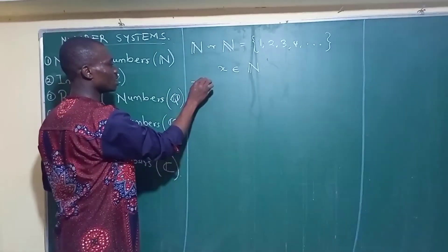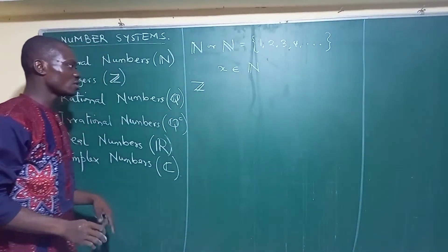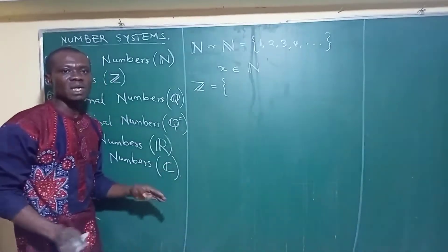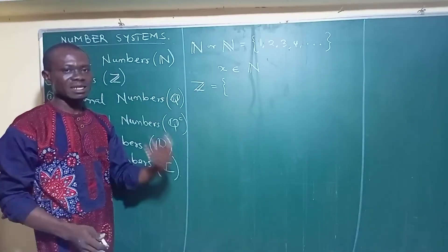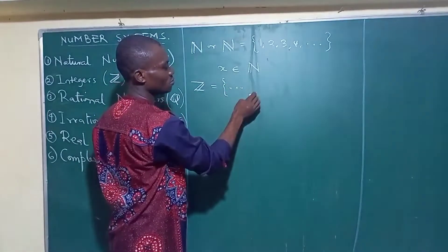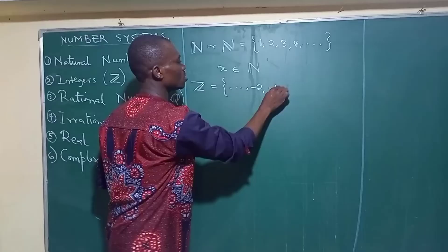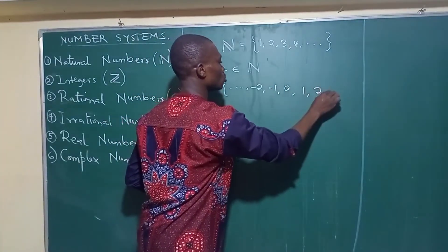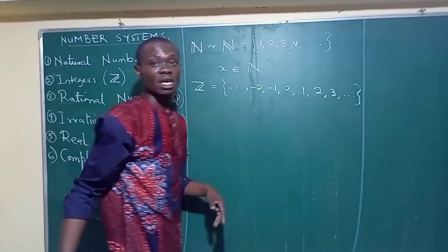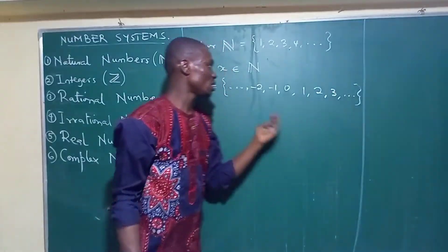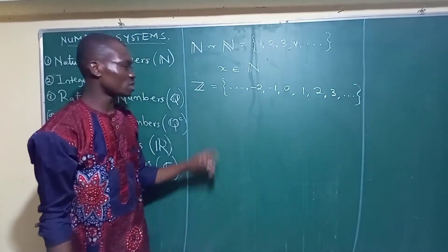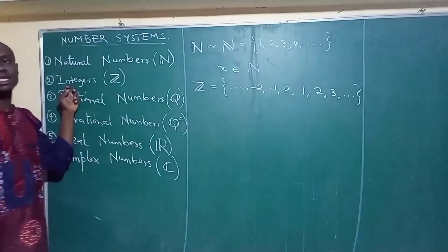The next one is what we call the set of integers. The set of integers are the set of numbers that include all whole numbers — both positive, negative, and 0. So they are given in this form: minus 2, minus 1, 0, 1, 2, 3, down to infinity. The three dots there signify that it continues to positive infinity on one side and to negative infinity on the other side. So all of these give us a set of numbers that we call the integers, and we represent them with the symbol Z with a backslash at the center.